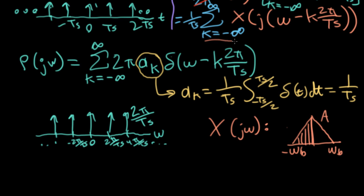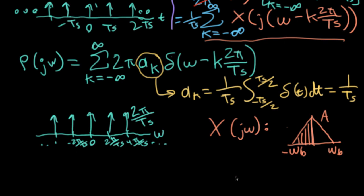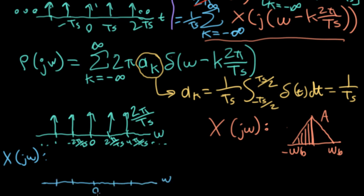If we think about what this is doing, basically there's a copy of big X that lands at the points of all these delta functions in the frequency domain — that's what you get when you convolve these functions together. So trying to plot what big XS of j omega looks like, I would wind up with something like this. Let me mark the same places on the horizontal axis: 2π over TS here, 4π over TS here, minus 2π over TS here. What lands in all of these spots? Just a copy of this.